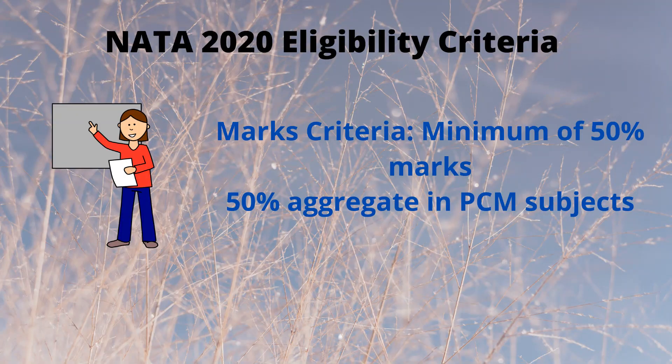For eligibility, plus two students must have Physics, Chemistry, and Mathematics in their plus one and plus two. For the marks criteria, you must have at least 50% marks.